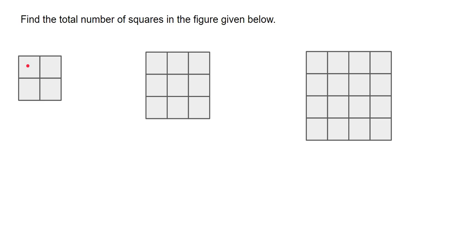For example, in this figure, how many squares are there? Normally people say one, two, three, four. But in addition to that, the entire figure itself makes one square — a two by two square, because there are two rows and two columns. So in total there are four plus one, five squares in this figure.